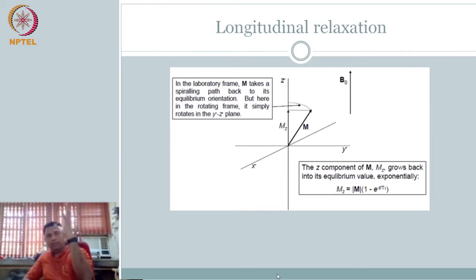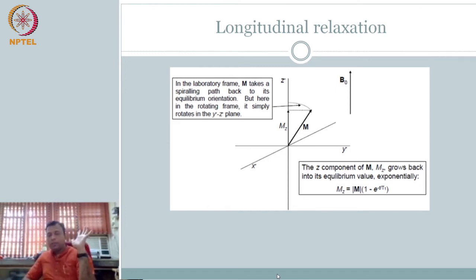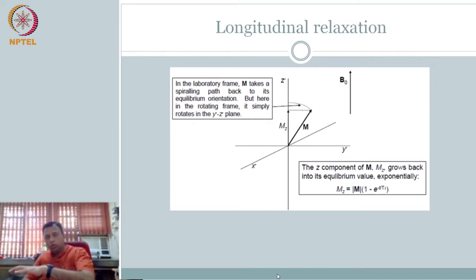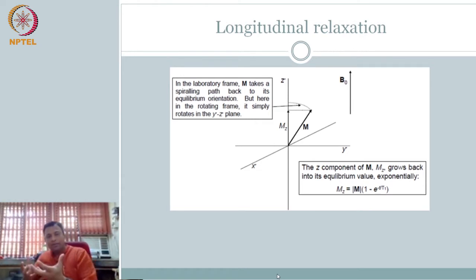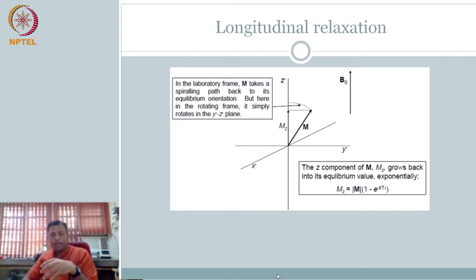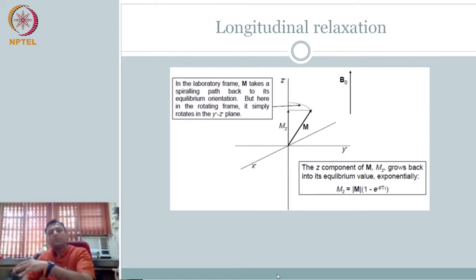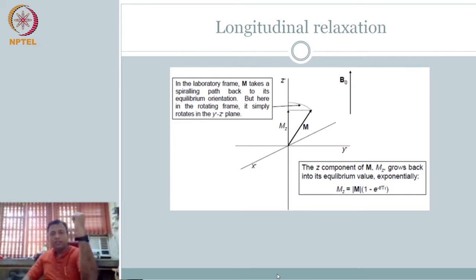Now the question is, I can play this game every time — follow the excitation, push it down, record the signal. But there is one more capability: T2, T1 — both of these are also characteristic of the material or the sample volume. If you are talking about hydrogen, if the neighbours are slightly different at that location, then you are going to have a different T2. And also depending on the loss, you are going to have a different T1.